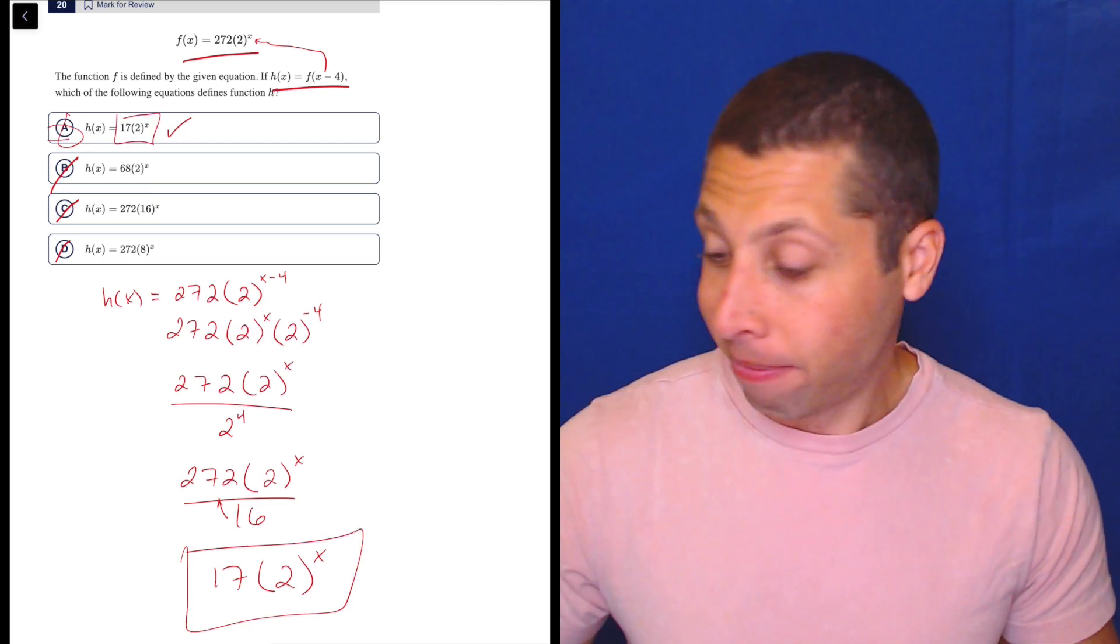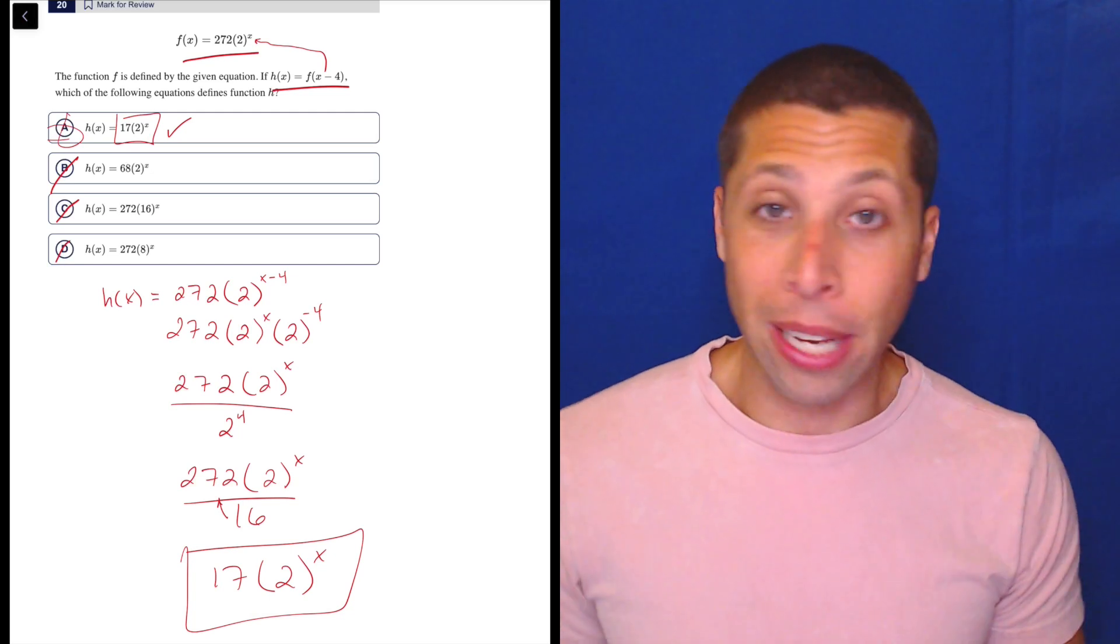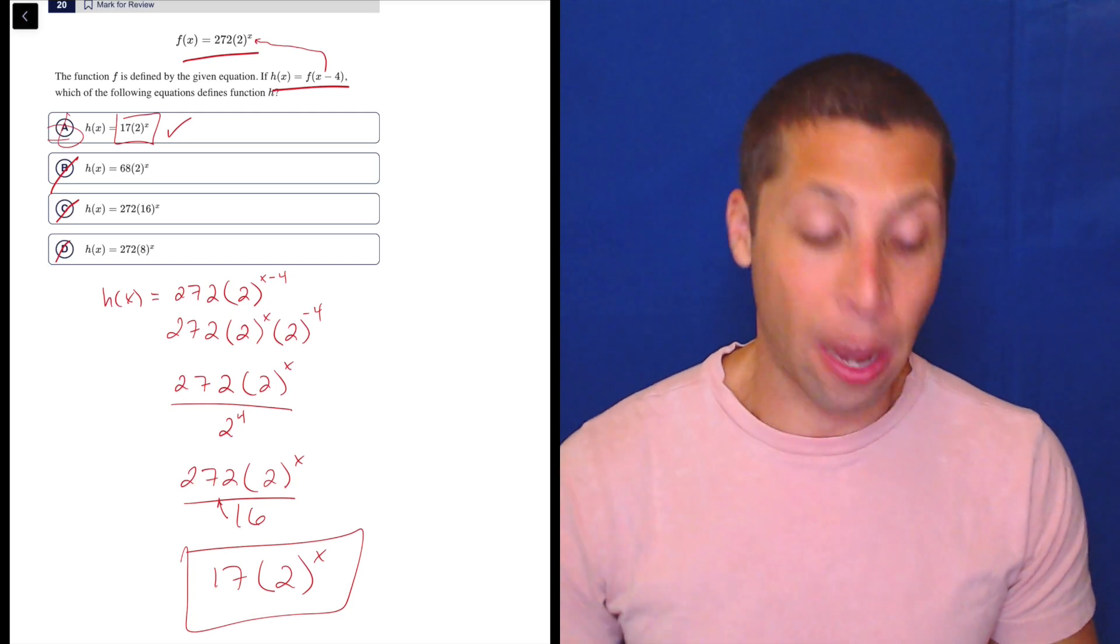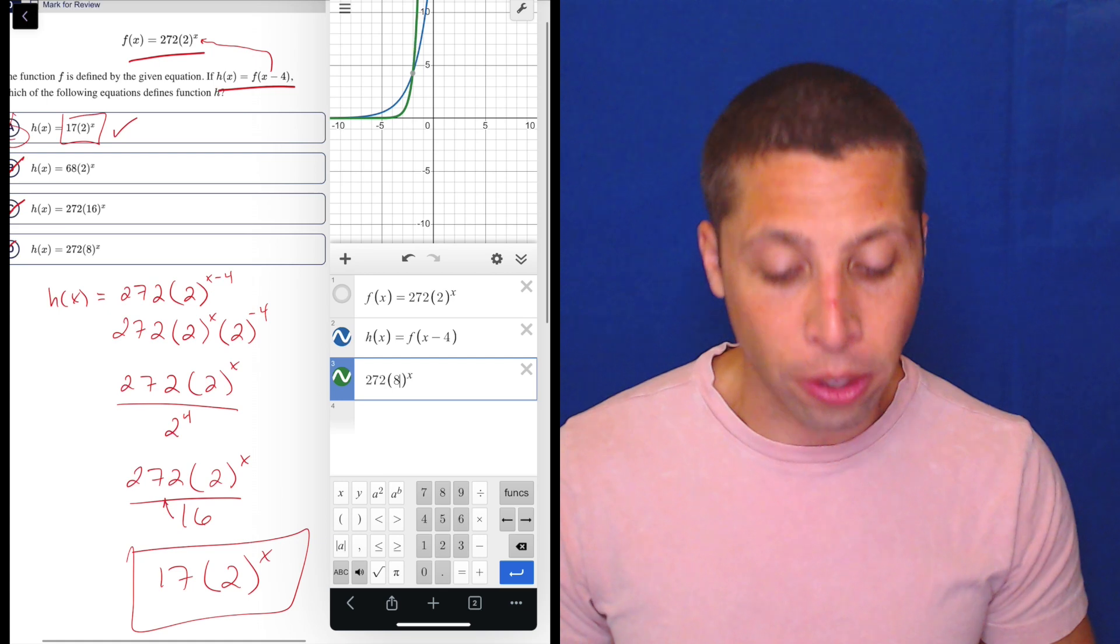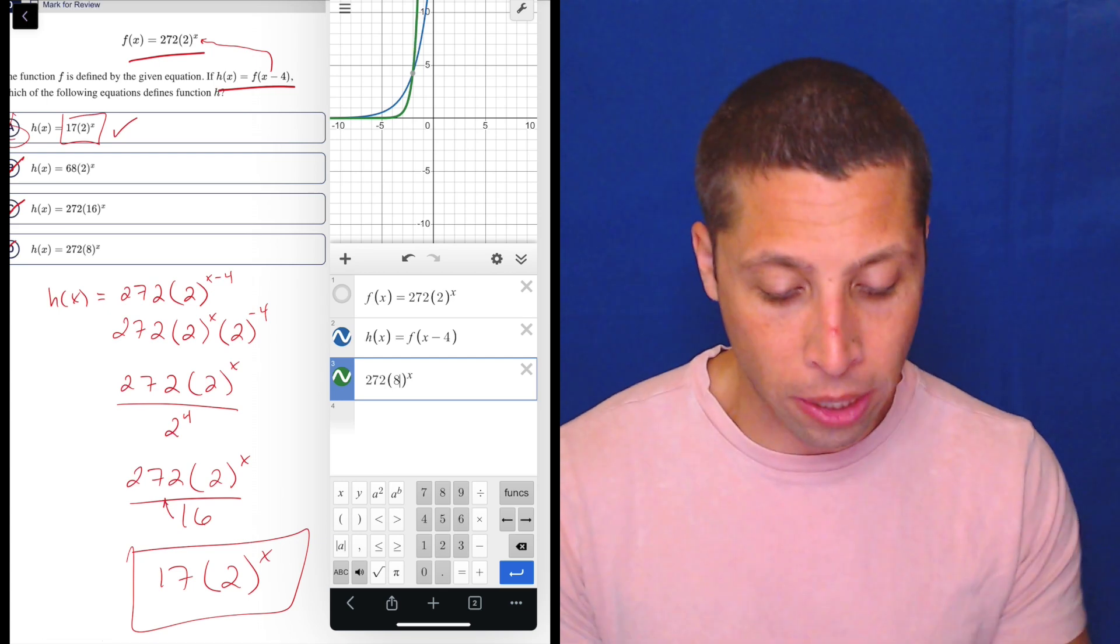I would never do it that way. I know how to do it. You saw me. But I would never, ever, ever do it that way. I would do exactly what I showed you. I'd go to Desmos. I'd type it in. I'd let it work itself out.